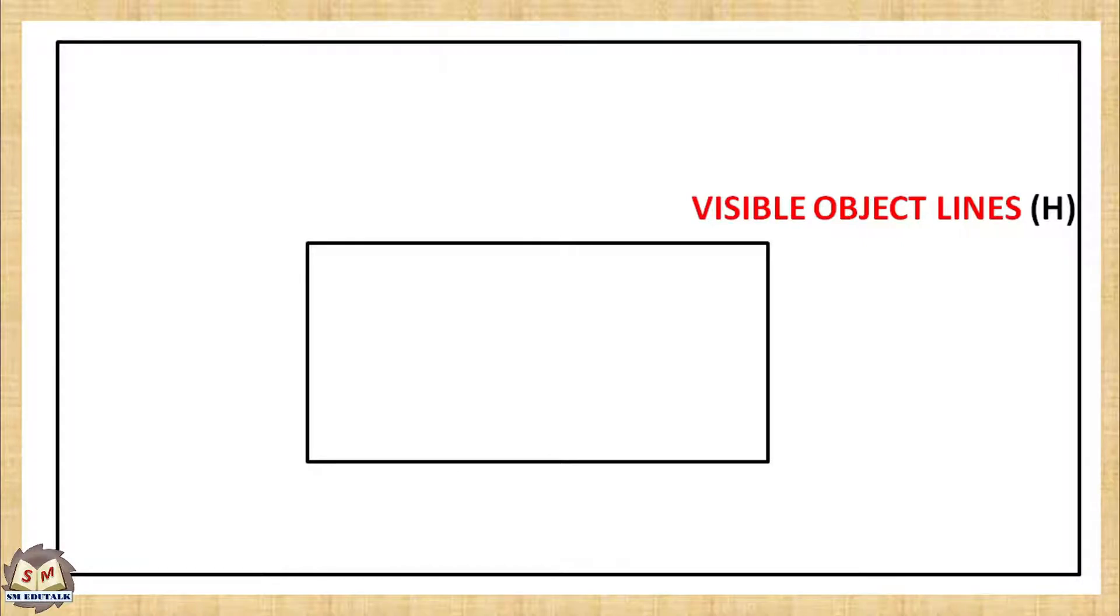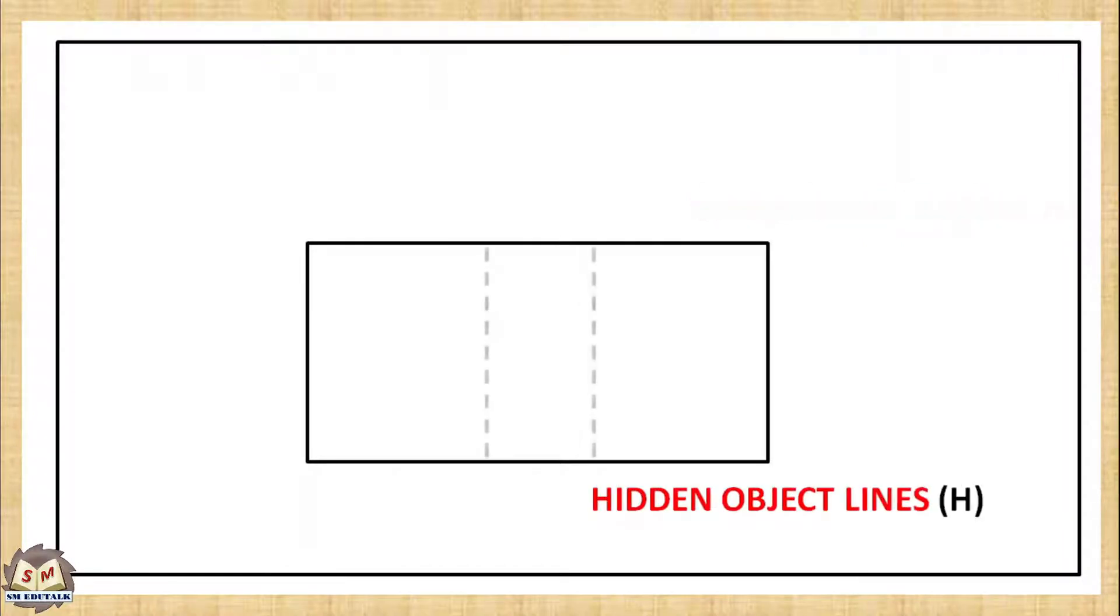We can't see the hole in the front view. To represent its invisible outer edges, dashed thick lines are used. You should use the same H pencil to draw these lines.